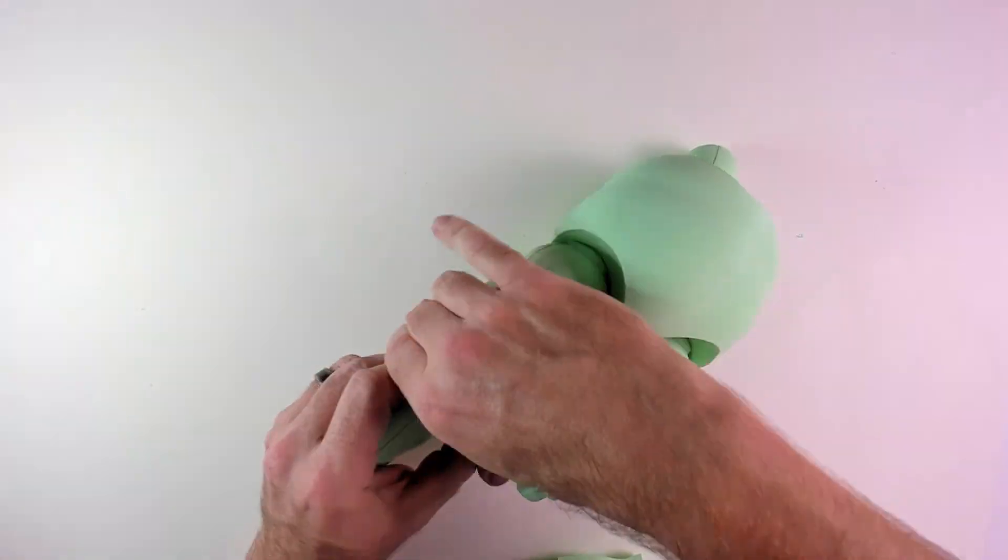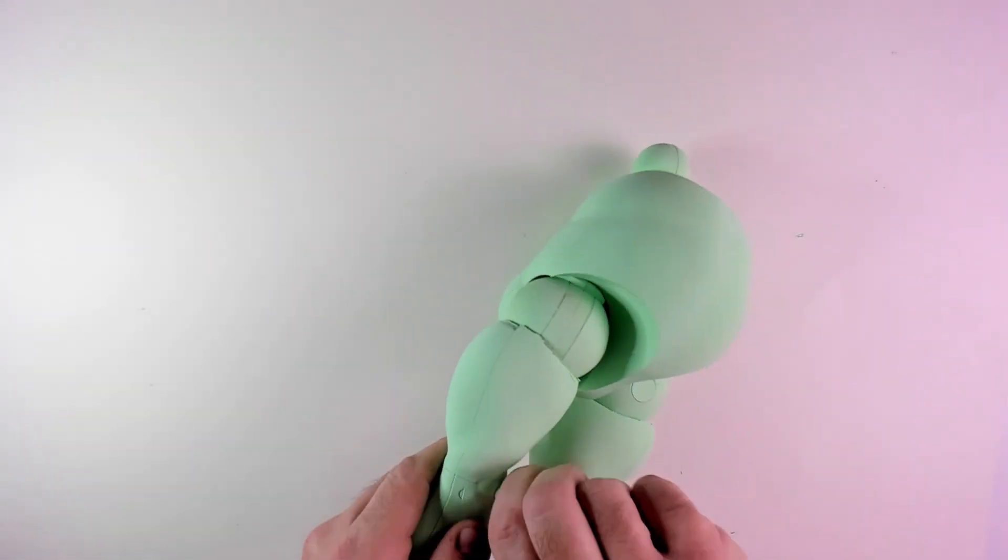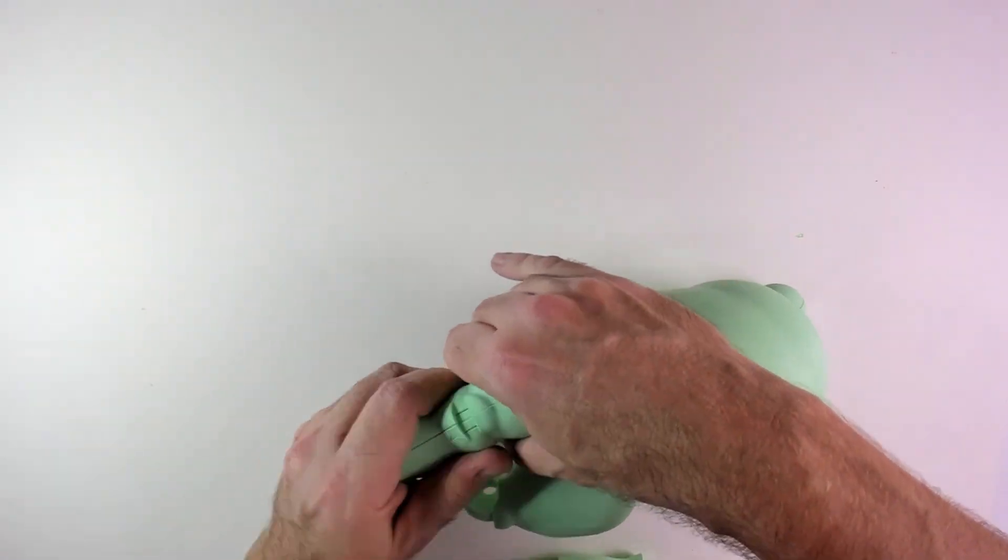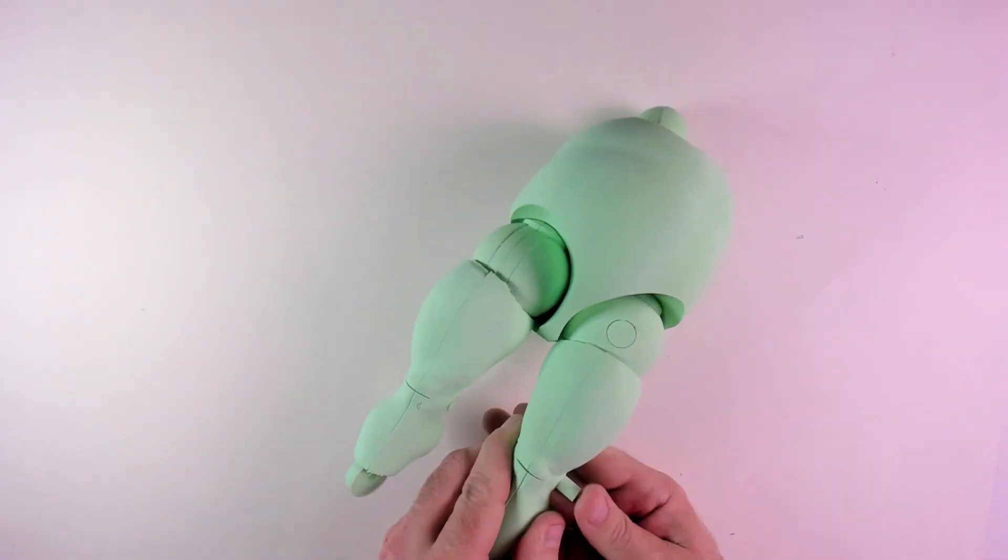After sanding the pins, it was still tight, but I was able to get them in. If the joints are too loose, then Grogu won't stay in place when you change how he's posed.